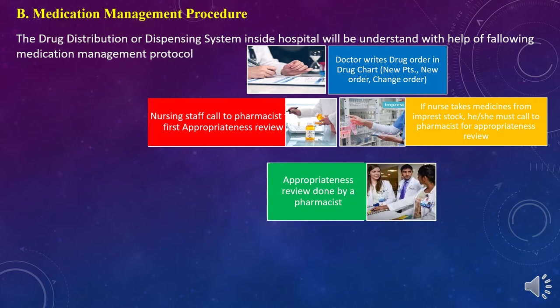The appropriateness review is a screening procedure performed mainly by the clinical pharmacist, responsible for reviewing the medication order written by the doctors during the prescription component, and transcription done by the nurses during the transcription process. The appropriateness review is done by the pharmacist after transcription and before dispensing.